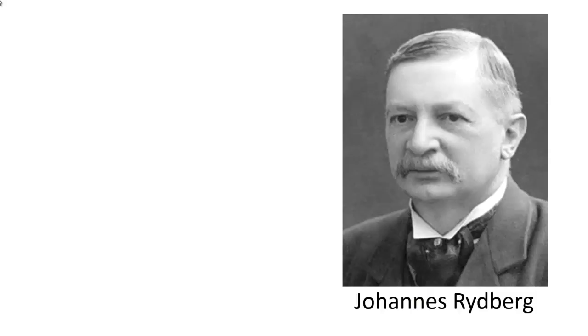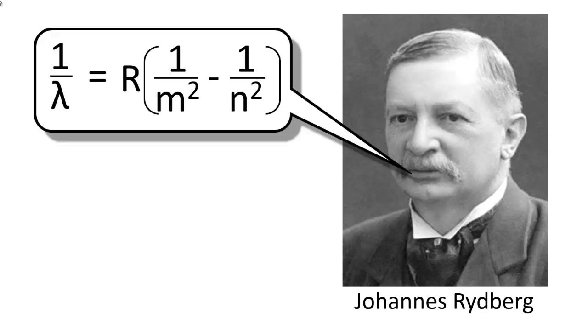In 1888, Johan Rydberg, a Swedish mathematician, came up with an equation that accurately predicted the wavelengths of light emitted by a hydrogen atom. In his equation,